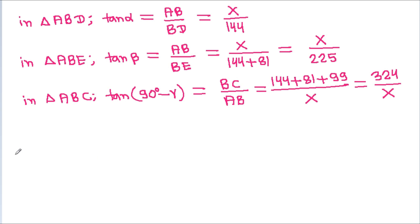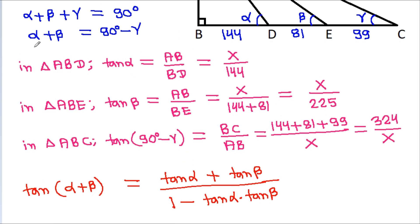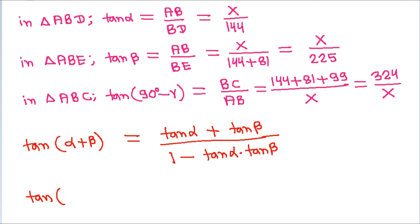Now, tan(alpha plus beta) equals tan alpha plus tan beta divided by 1 minus tan alpha times tan beta, and this equals tan(90 degrees minus gamma), which is 324 by X. Since alpha plus beta equals 90 degrees minus gamma.